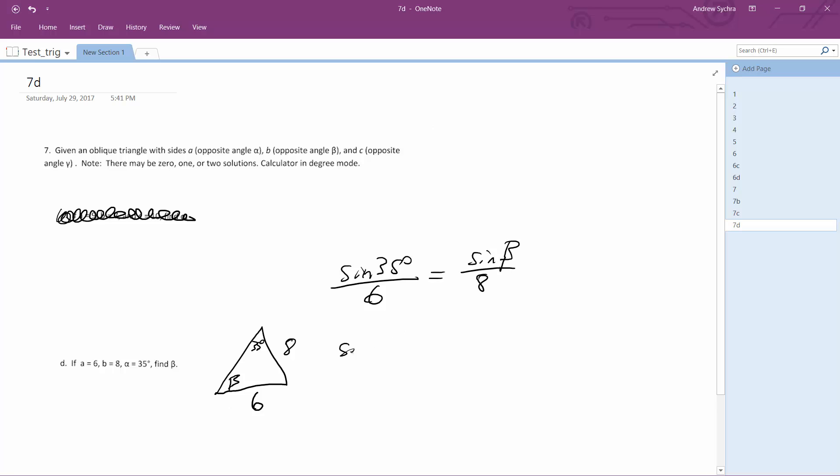So we get sine of beta times 6 equals 8 times sine of 35. Then sine of beta equals 8 times sine of 35 degrees over 6.